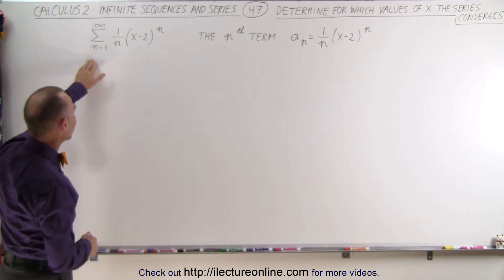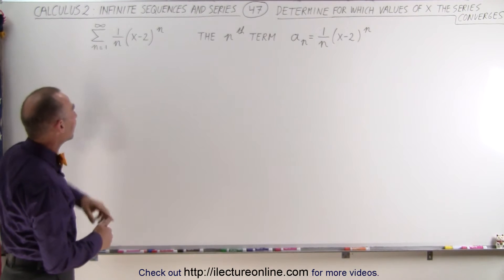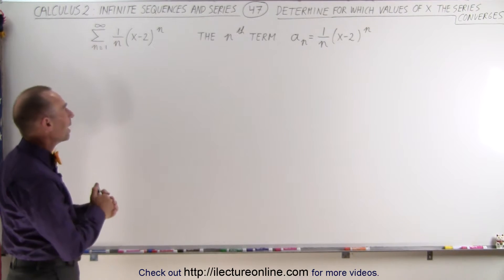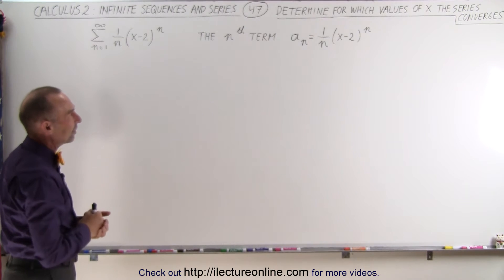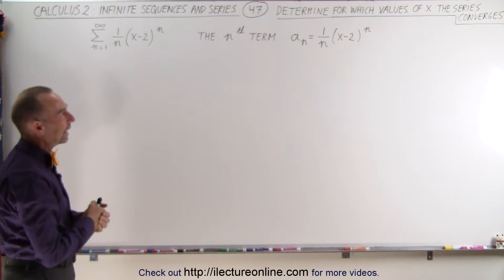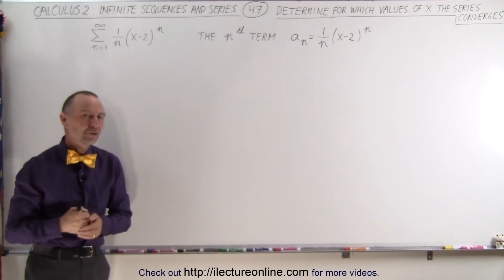And here's the series, here's the infinite series: 1 over n times the quantity x minus 2 to the n power. So the nth term is a sub n equals 1 over n times x minus 2 to the n power.